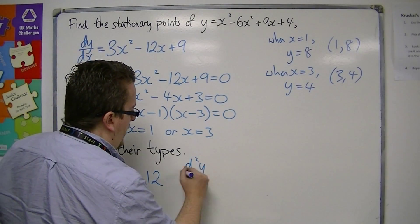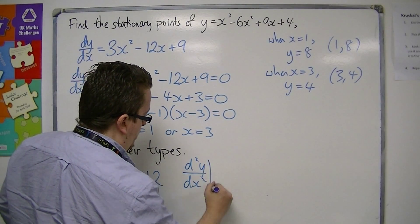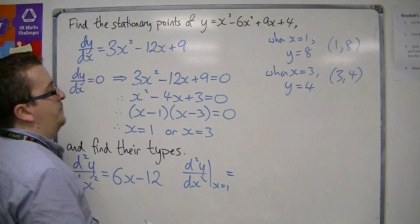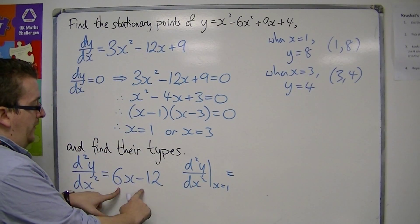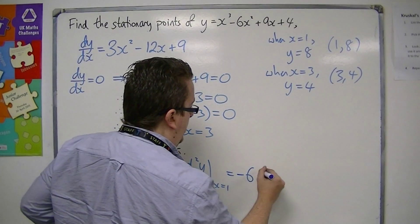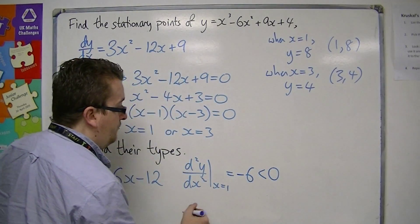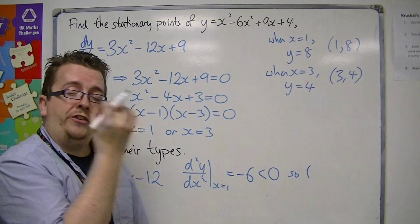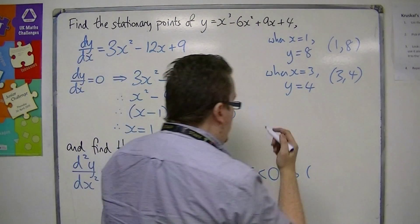Now we evaluate this at x equals 1 first. When x is 1, we get 6 - 12 is -6, and that's negative. So that would mean that the stationary point of (1,8) is a maximum.